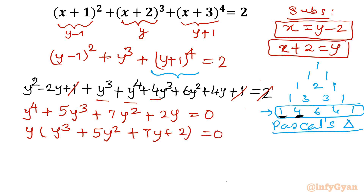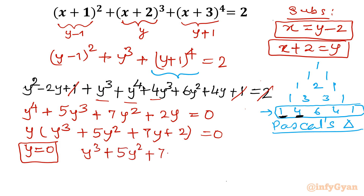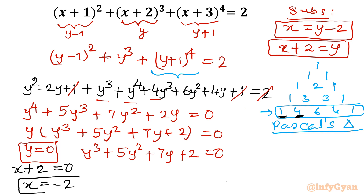Since the product is zero, either y = 0 or the cubic equation equals zero. If y = 0, we put back our substitution: y = x+2 = 0, so x = −2. That is our first solution, a negative integer.